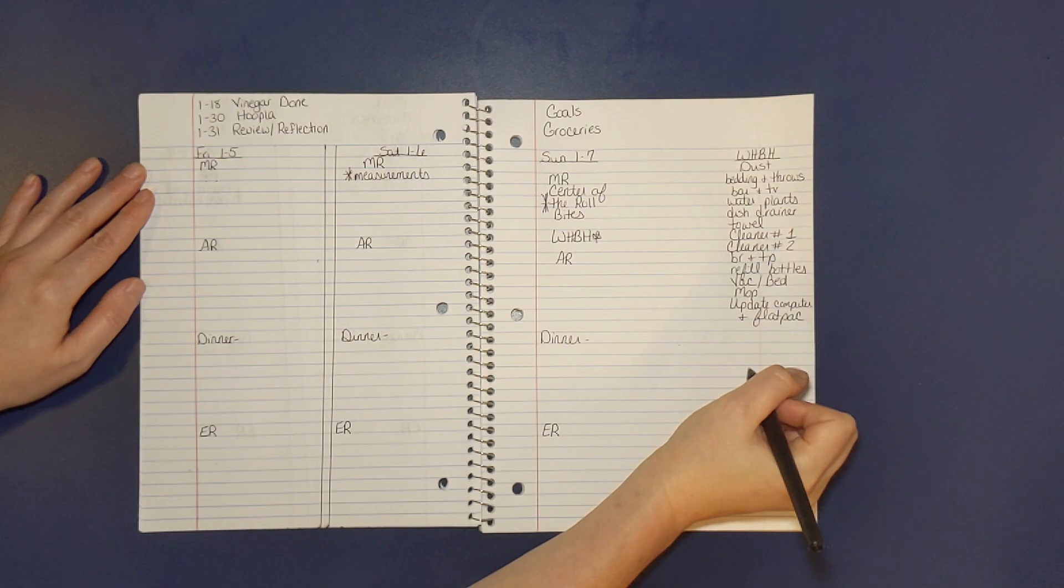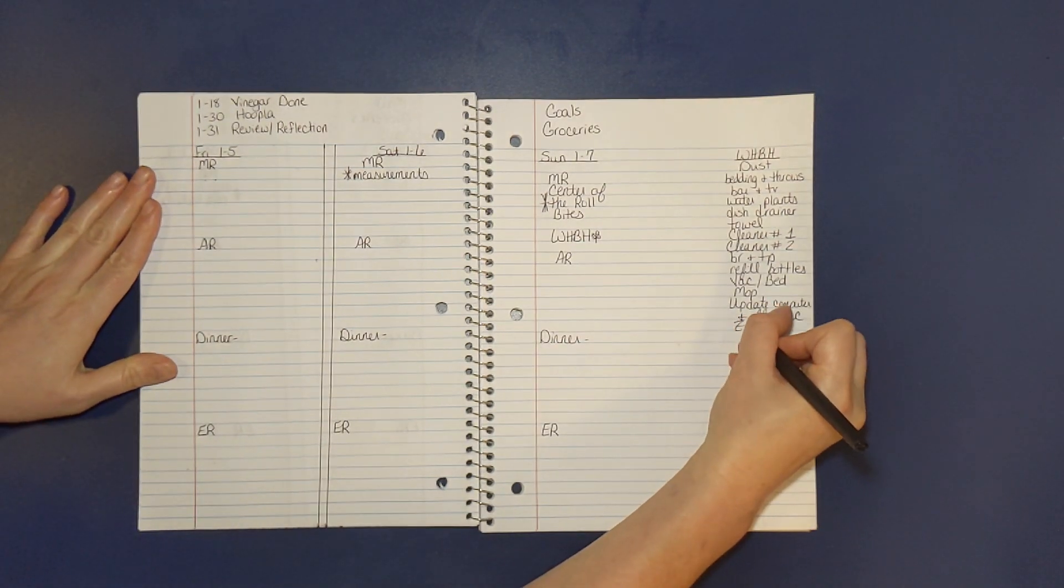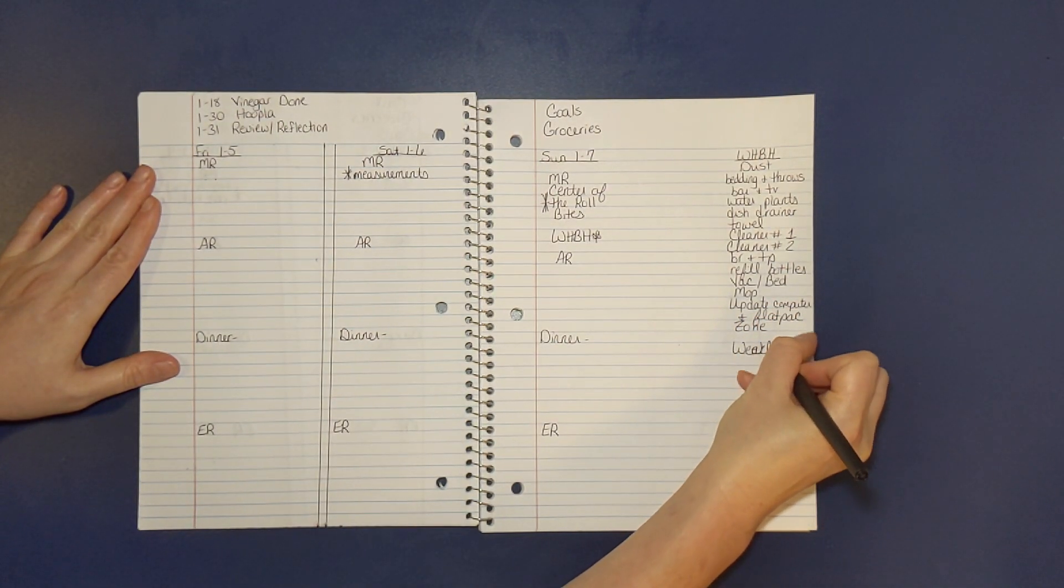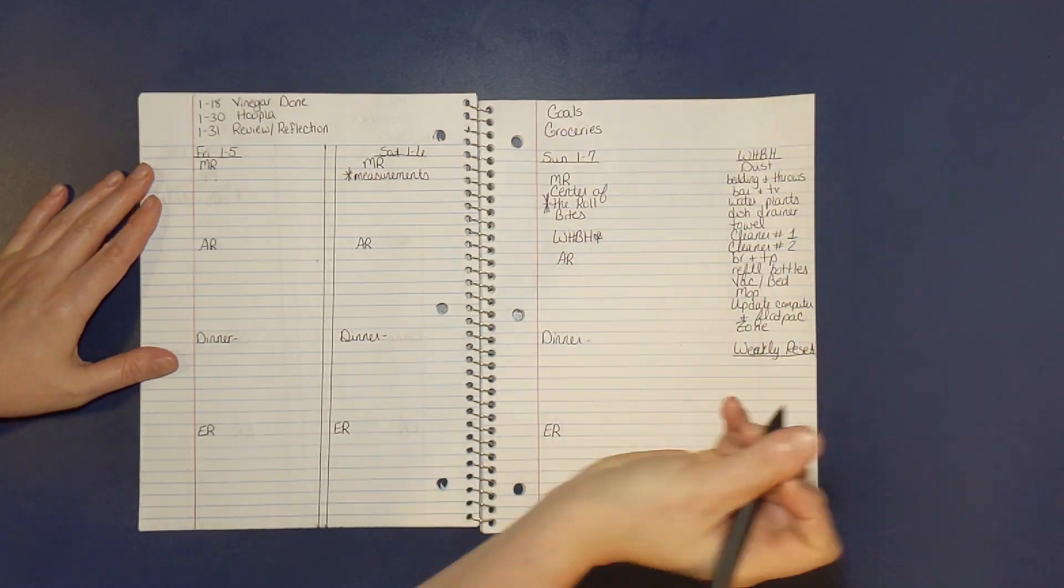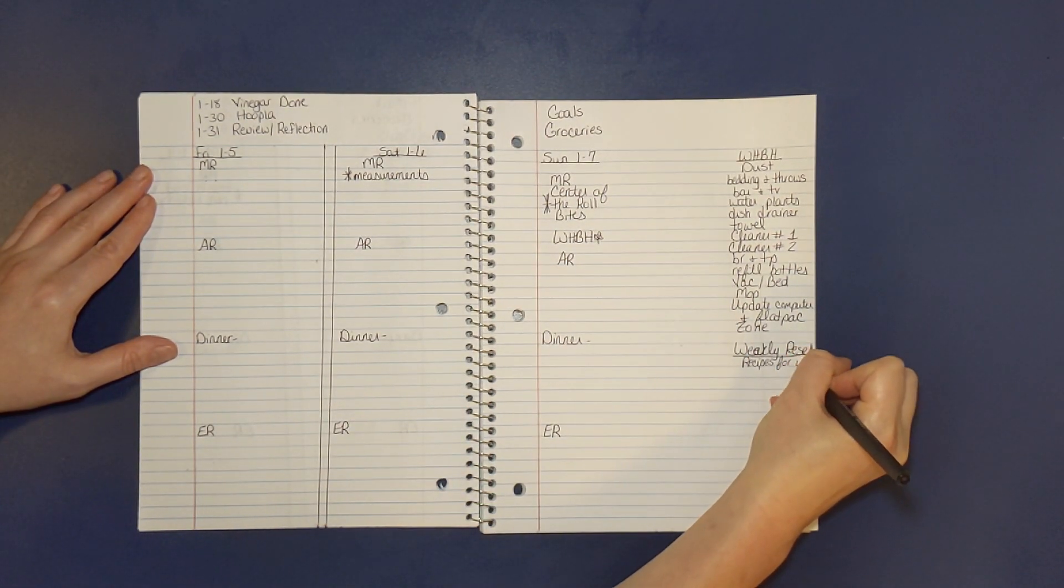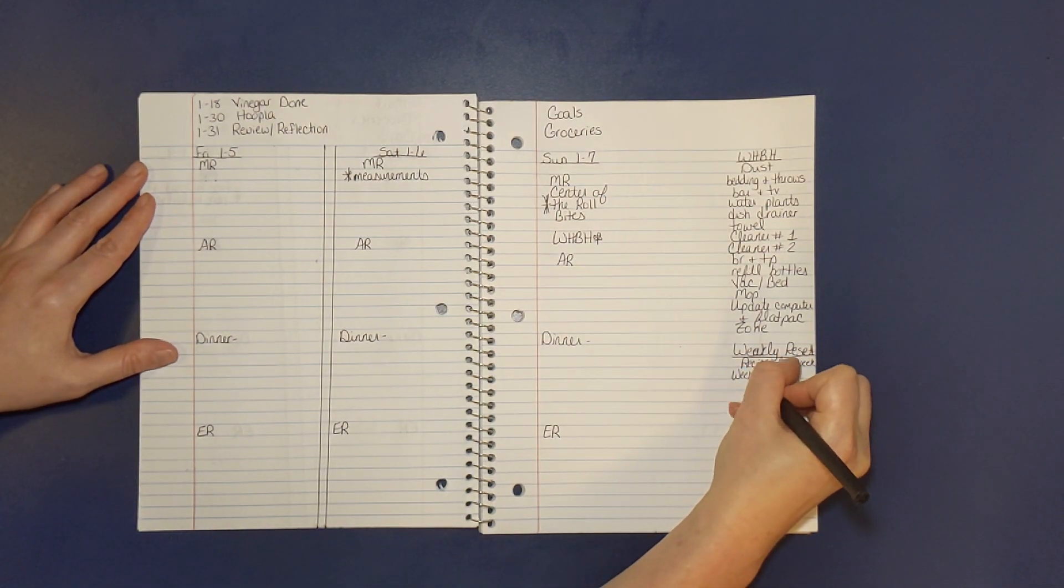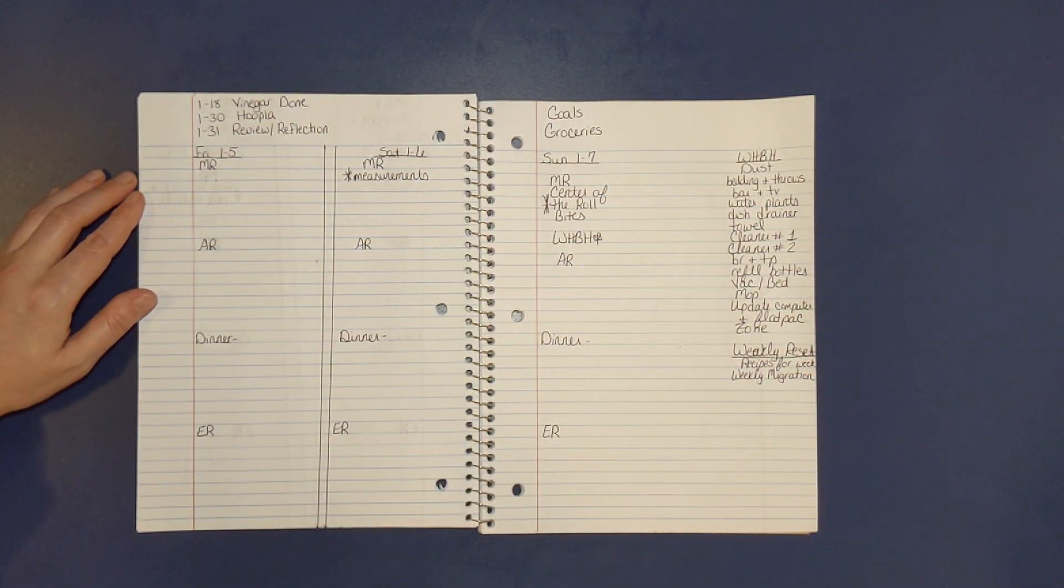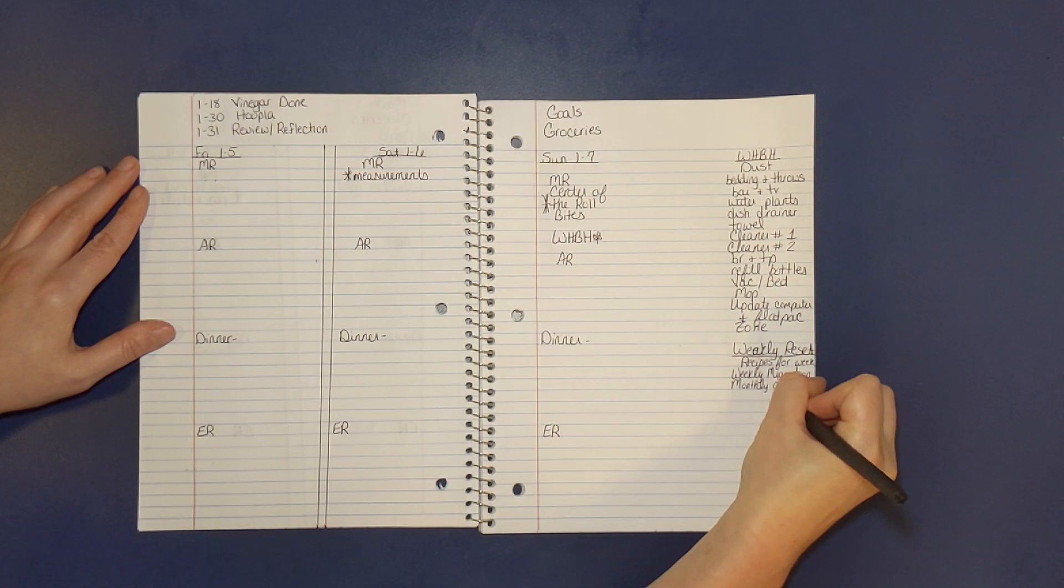Next, I vacuum and mop. Then I update the computers and get some zone work done. Now I'm adding a weekly reset where I find all the new recipes we want to try this week and transfer any things I didn't get done in this previous week to this week and try and fill in some monthly goals as well.